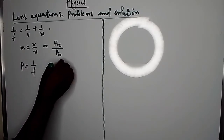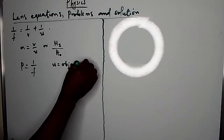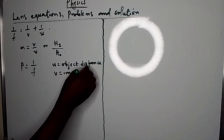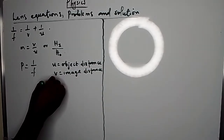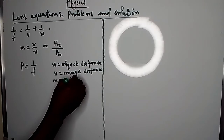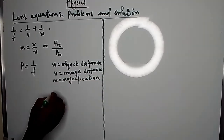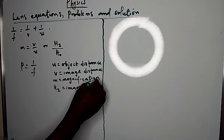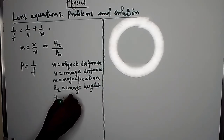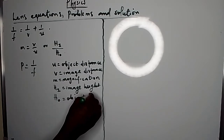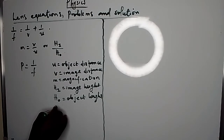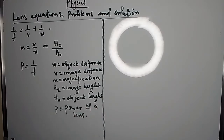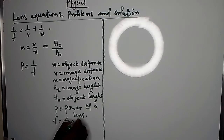You need to understand that U is the object distance, V is the image distance, M is magnification, H subscript I is image height, and H subscript O is object height. P is power of the lens, and F is focal length.